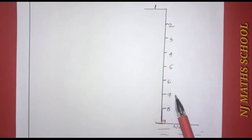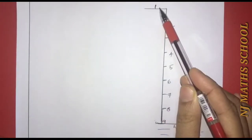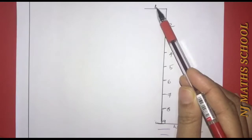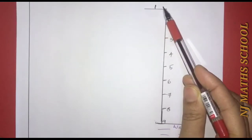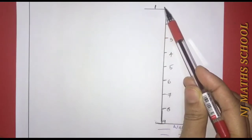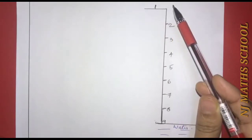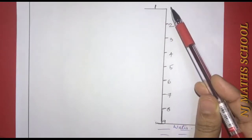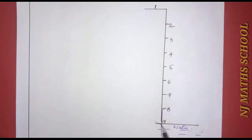A monkey is sitting on the first step. You can see that the topmost step is the first step. The monkey is sitting on the first step. The water level is at the ninth step.